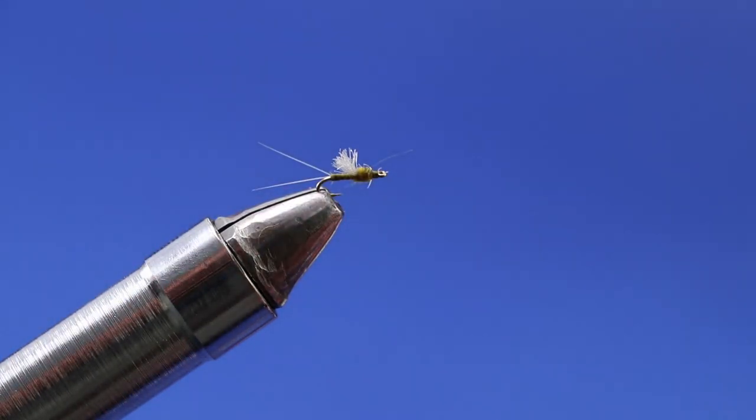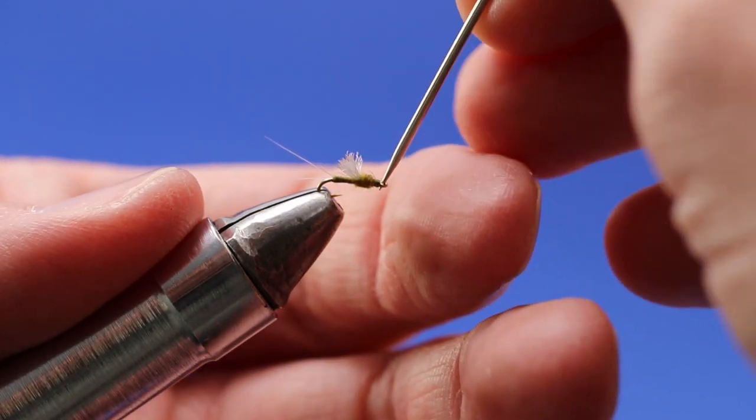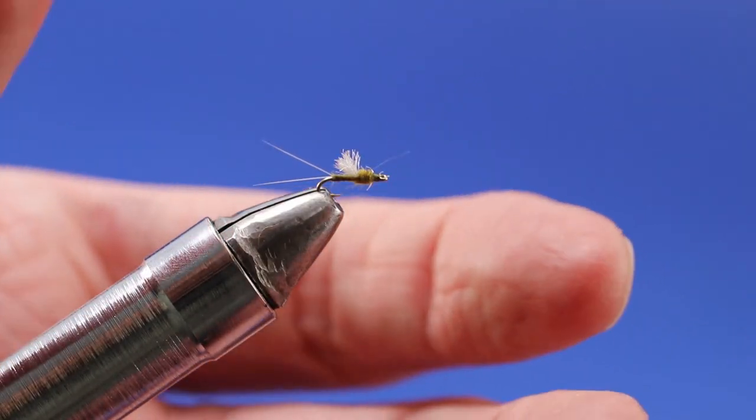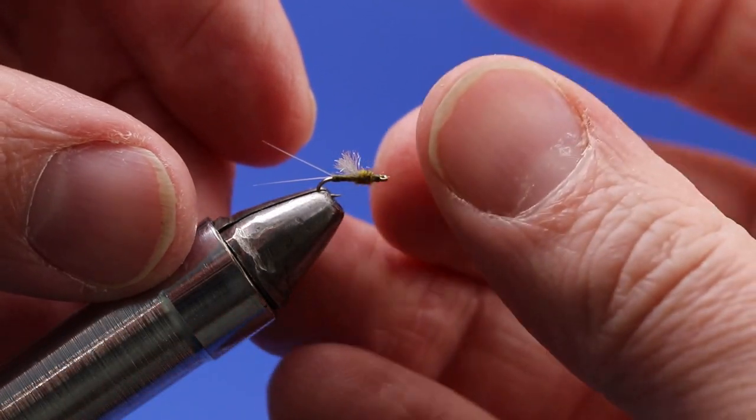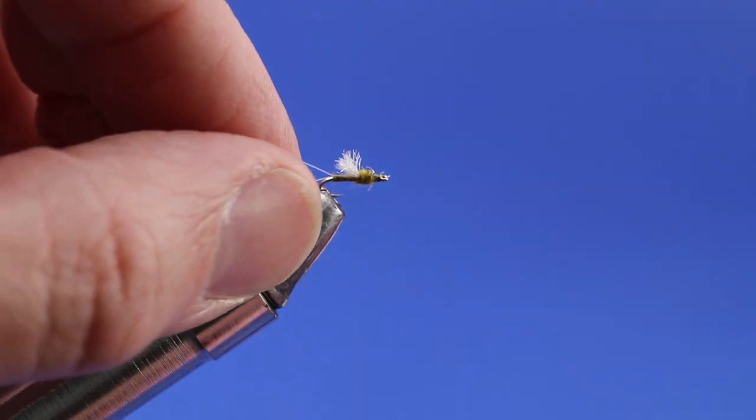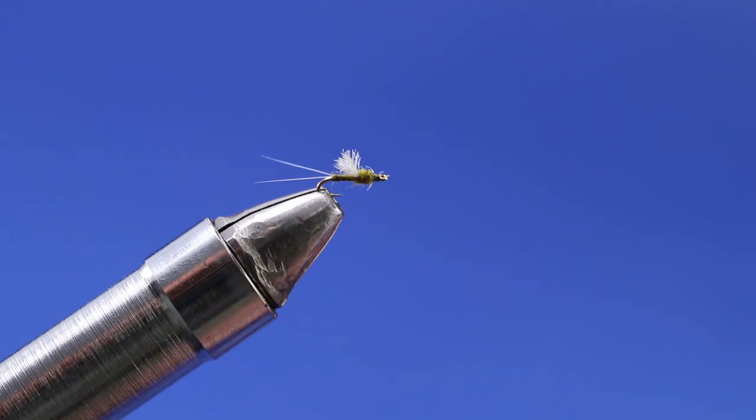There is a size 20 Olive RS2. It's not a terribly hard fly to tie, but just the size of it does present some unique challenges, and getting those micro-fibits to lay just right is kind of a challenge too.